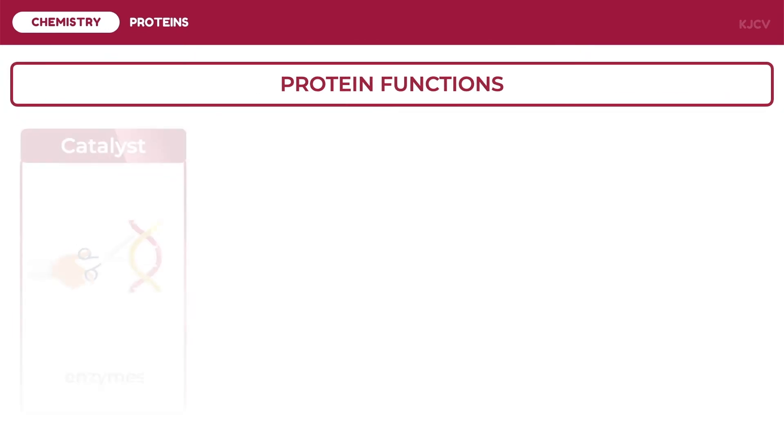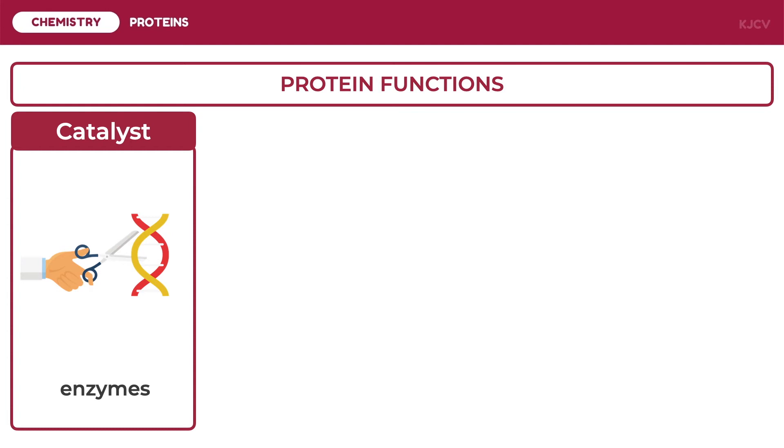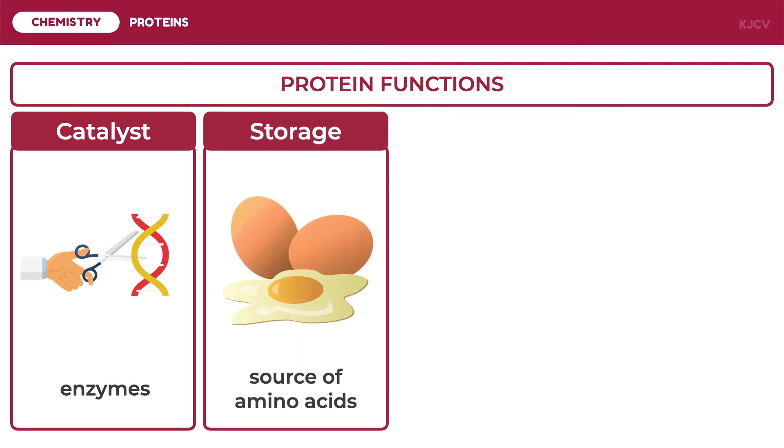Proteins may serve as catalysts which contribute to the selective acceleration of chemical reactions. Examples of this are digestive enzymes and restrictive enzymes of the DNA. Proteins also act as storage or source of amino acids, for example casein in milk and ovalbumin in eggs.